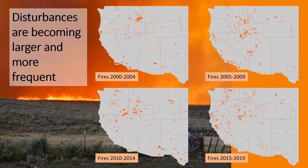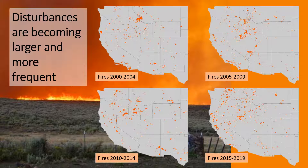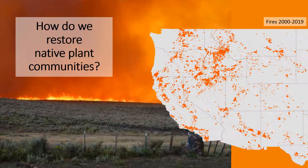I started working in the Great Basin in 2008 and even in the relatively short period of time that I've been working there, it has become clear that disturbances are increasing in frequency and size. Here I'm showing fire perimeters across the last 20 years as an example of one type of disturbance that is adversely affecting native plant communities. Over time, these disturbances add up, causing resource managers to wonder how to restore native plant communities in these areas of disturbance.